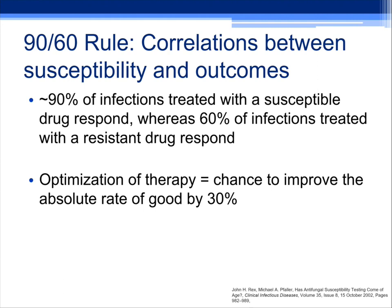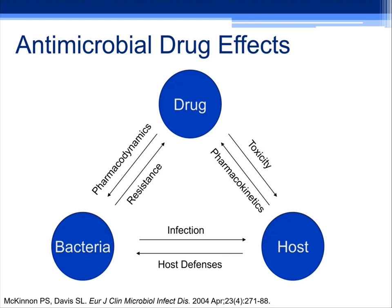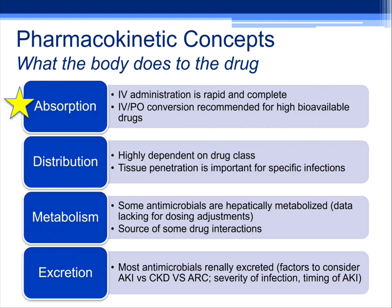I'd like to start with a famous article from 2002 called the 90-60 rule. About 90% of infections treated with a susceptible drug respond, while 60% of infections treated with a resistant drug respond. That may seem odd, but think about how many times you've been consulted on an ESBL pyelonephritis on ceftriaxone where the patient is afebrile and hemodynamically stable. That comes down to heterogeneous populations — some ESBL, some non-ESBL. Through optimization of therapy, we have a chance to improve outcomes by about 30%, within the drug-host-bacteria triangle involving toxicity, pharmacokinetics, infection, host defenses, and pharmacodynamics with resistance.